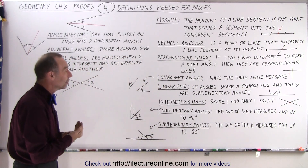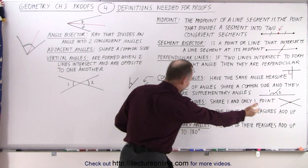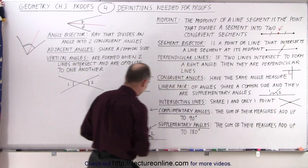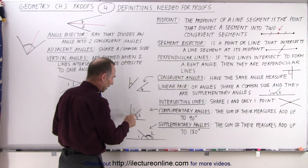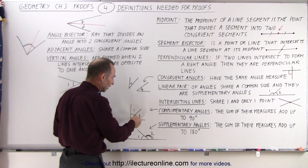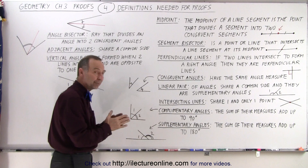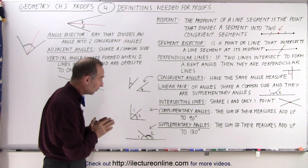Complementary angles: the sum of their measures adds up to 90 degrees. Here's an example of two angles together — their angle measures add up to 90 degrees.